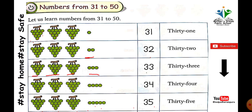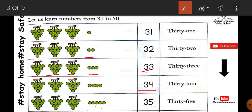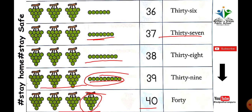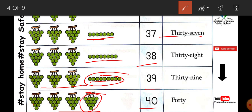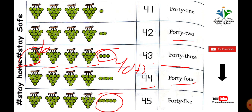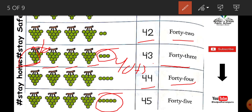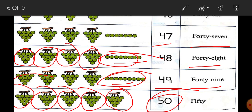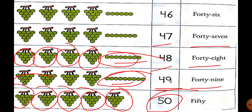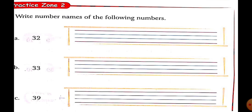We have covered numbers 31 to 50: thirty-one, thirty-two, thirty-three, thirty-four, thirty-five, thirty-six, thirty-seven, thirty-eight, thirty-nine, forty, forty-one, forty-two, forty-three, forty-four, forty-five, forty-six, forty-seven, forty-eight, forty-nine, fifty. Now, write the number names of the following numbers.